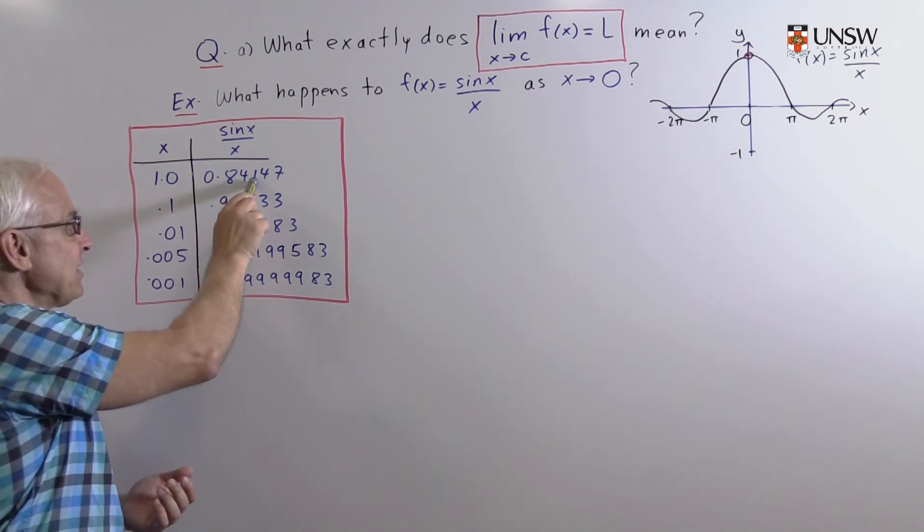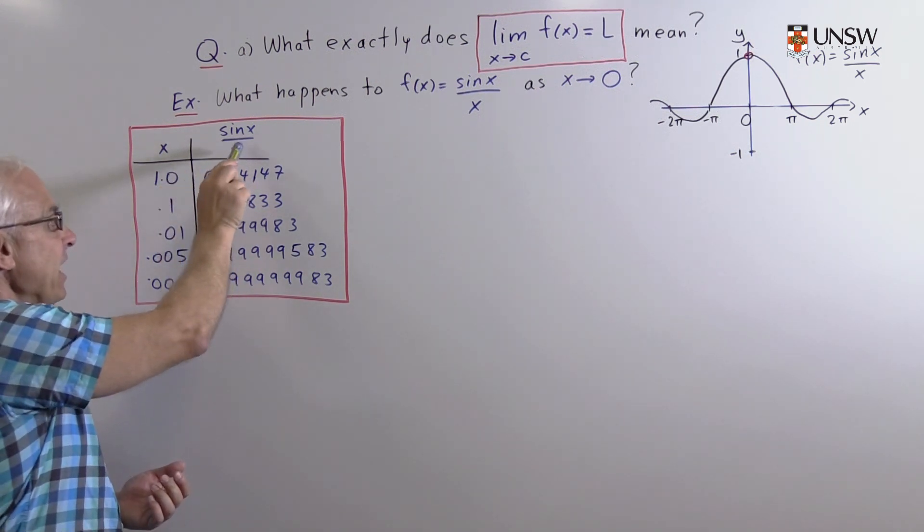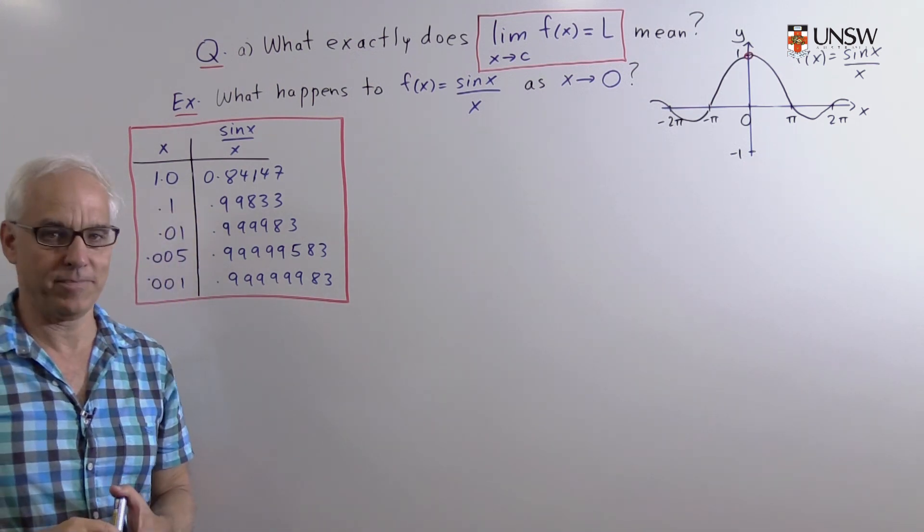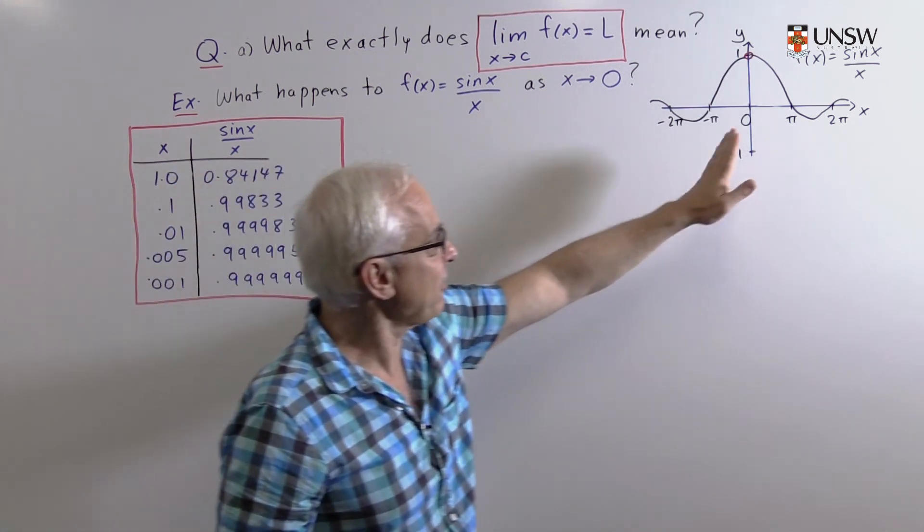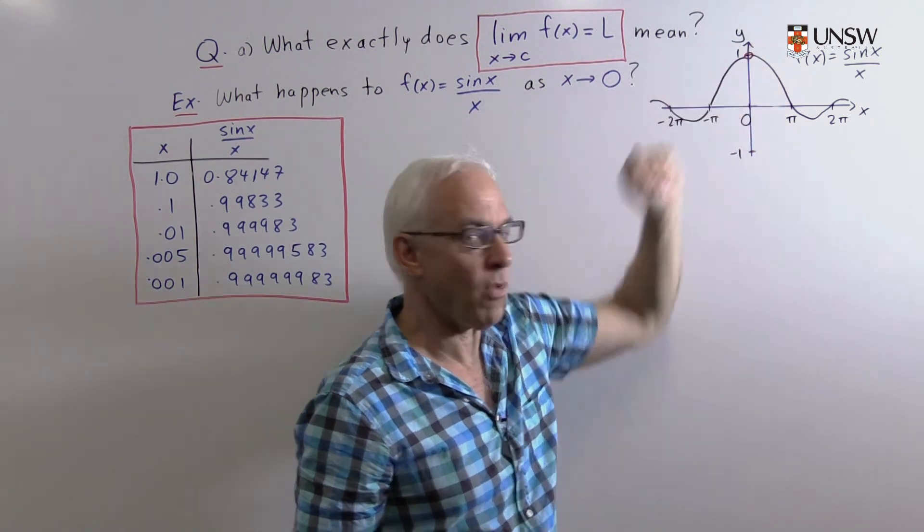So this is also the value of sine x over x when x equals minus 1. That's reflected in the graph here by the symmetry about the y-axis.